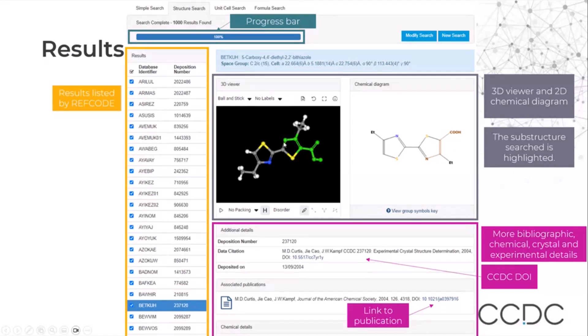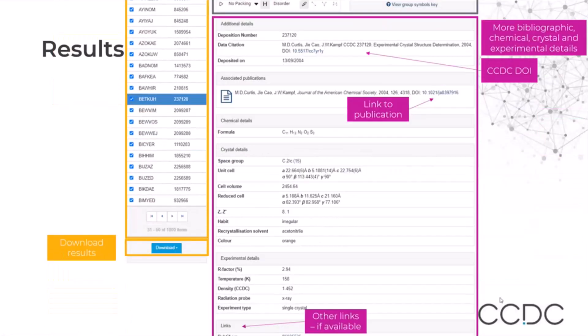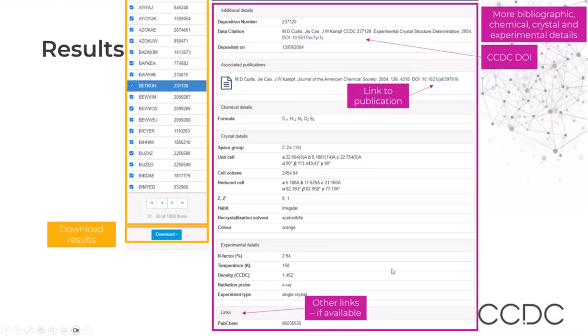As we did the substructure search, the substructure is highlighted. Below, we can find more bibliographical, chemical, crystal, and experimental details including a link to the CCDC DOI, the link to the publication, and if we scroll down, we find other links to other repositories if available.